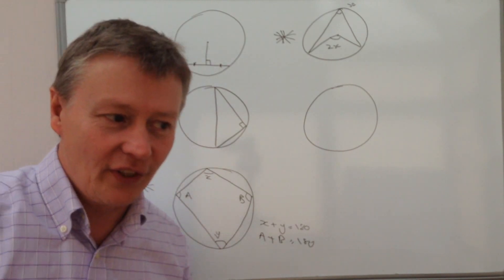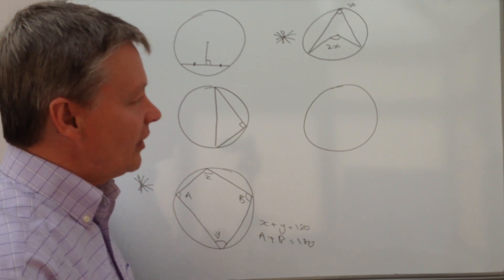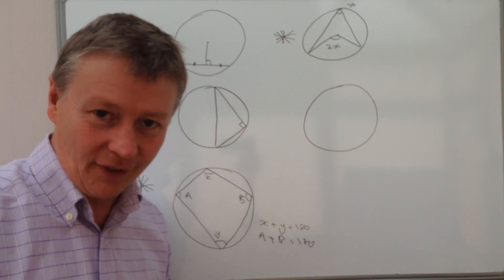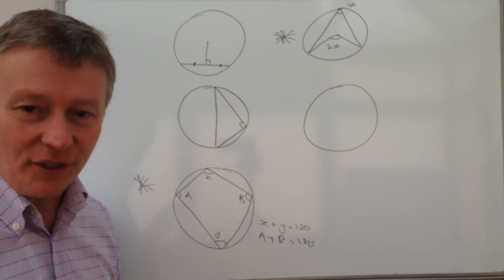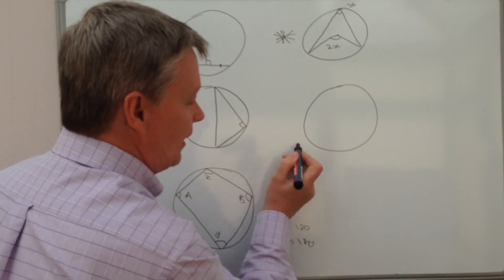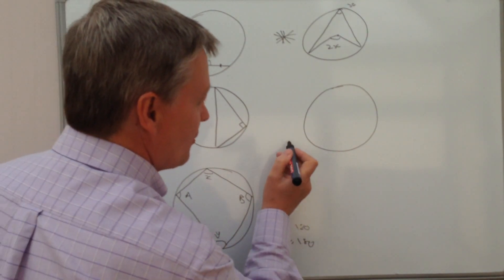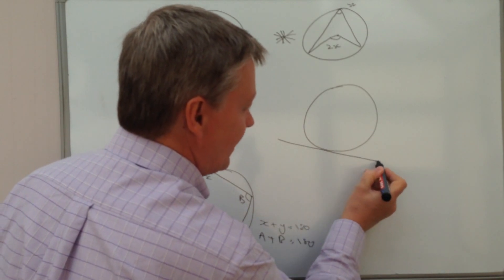So we've got that one, and this is called the alternate segment theorem. And it's used a little bit from time to time, you do come across it. Now it's a little bit tricky to draw, so I'm going to have to refer to my notes.